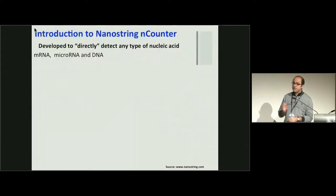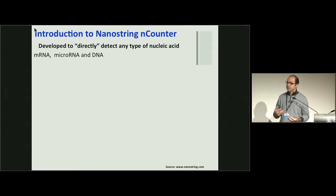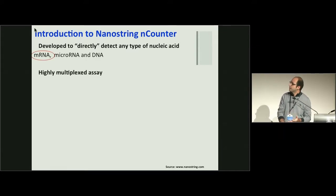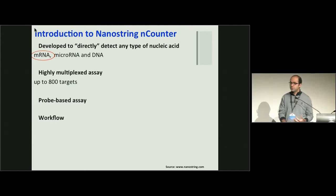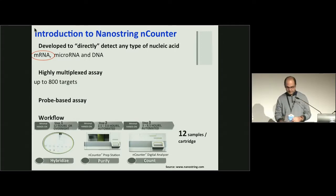I'm going to give you a little bit of information about NanoString. This platform is designed to directly type nucleic acids - it can be microRNA, RNA, or DNA. Directly means you don't need any cDNA synthesis or amplification step. I'm going to focus on mRNA expression today. It's a highly multiplexed assay - you can profile up to 800 genes. It's a probe-based system with a very straightforward workflow, and usually people profile 12 samples at a time.